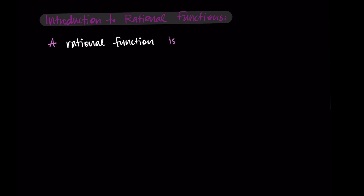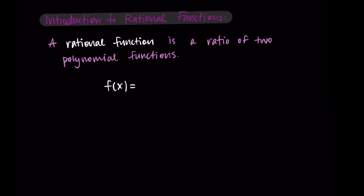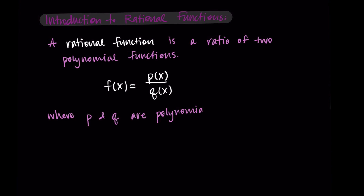A rational function is a ratio of two polynomial functions. The word rational has the word ratio in it, so a rational function has this ratio. Specifically, it looks like f of x equals p of x over q of x, where p and q are polynomials. We also have to have the condition that q of x is not equal to zero, since we have a ratio or a fraction, and we can't divide by zero.